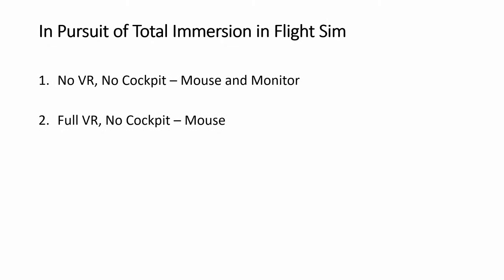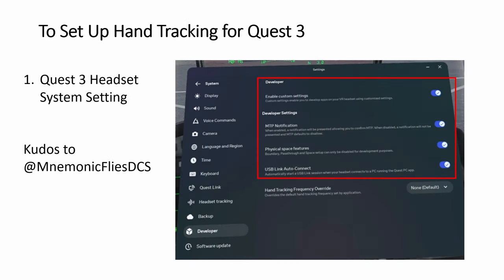So let's take a step further: hand tracking. There are various ways to do hand tracking. You may use a VR glove, or use the Leap Motion hand tracking device, or the Quest 3 can also do hand tracking. We'll look at the steps to enable hand tracking in DCS such that it can operate the switches. Kudos to MnemonicFlyDCS — thanks to him, we now know the four steps to make hand tracking work for the Quest 3.